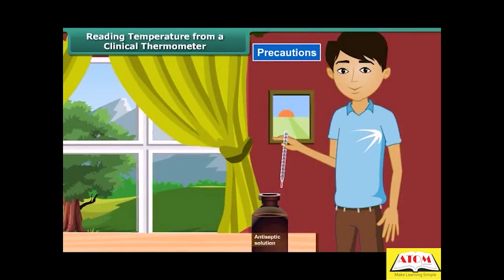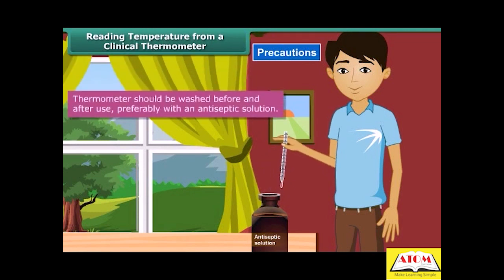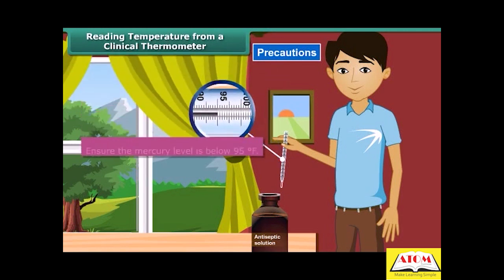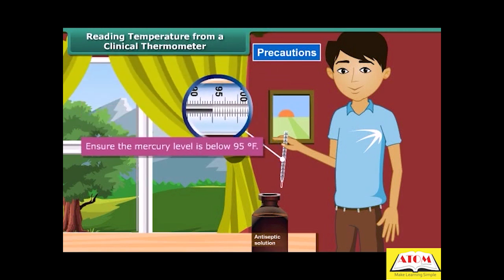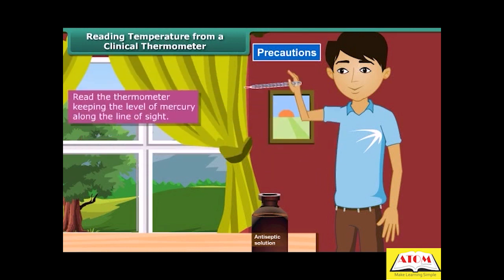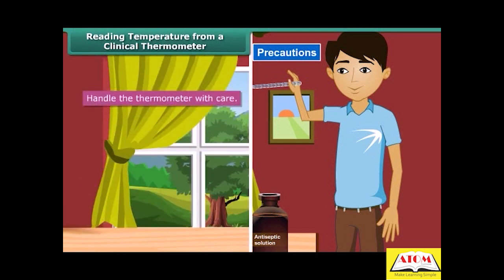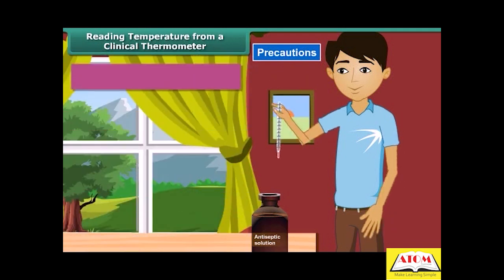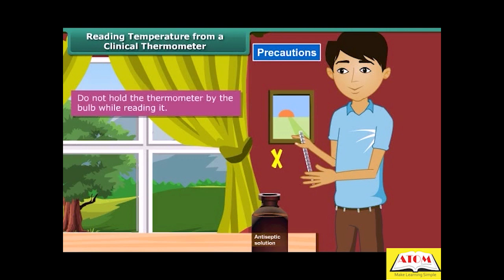Precautions to be observed while reading a clinical thermometer: Thermometers should be washed before and after use, preferably with an antiseptic solution. Ensure the mercury level is below 95°F. Read the thermometer keeping the level of mercury along the line of sight. Handle the thermometer with care — if it hits against a hard object, it can break. Do not hold the thermometer by the bulb while reading it.